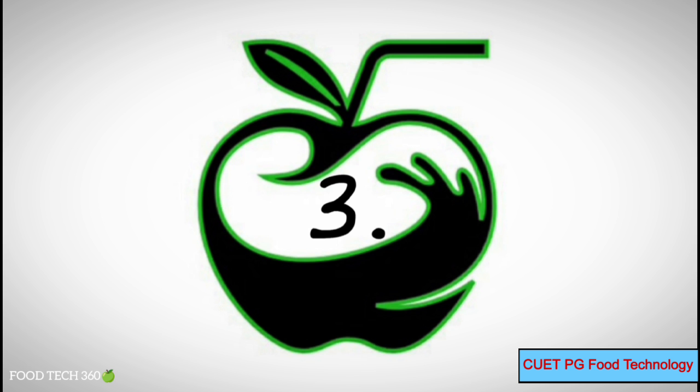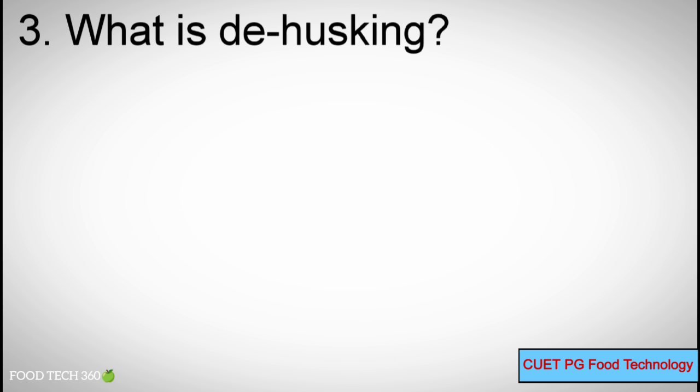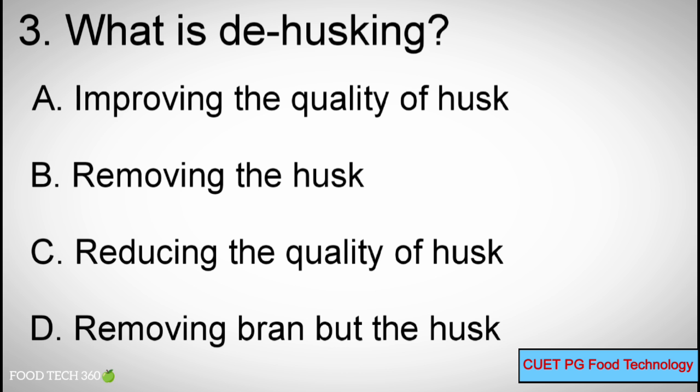Q3. What is dehusking? A. Improving the quality of husk. B. Removing the husk. C. Reducing the quality of husk. D. Removing bran but not the husk.